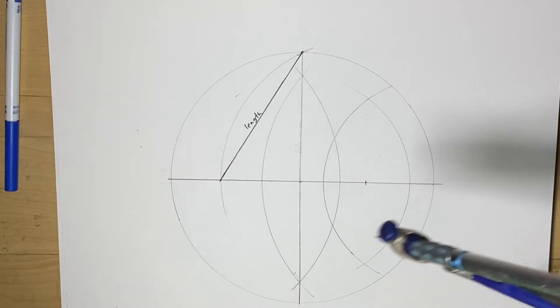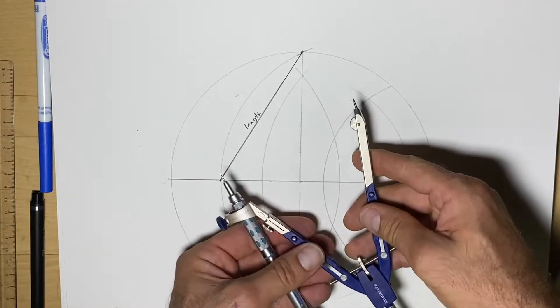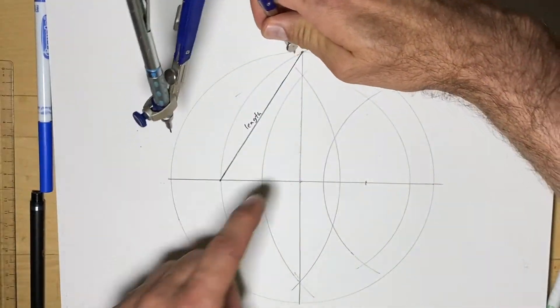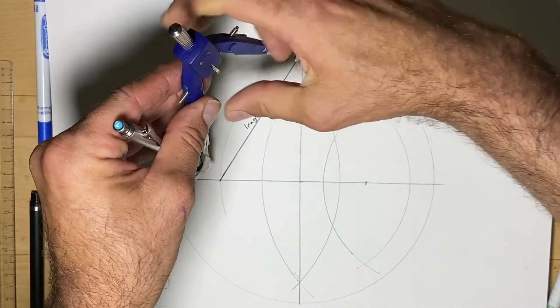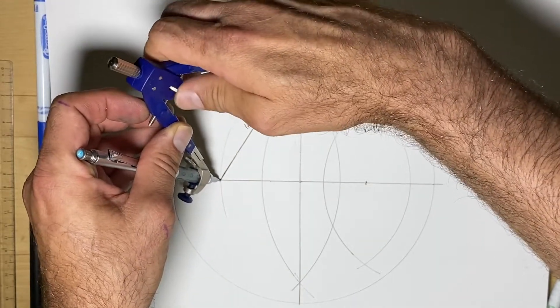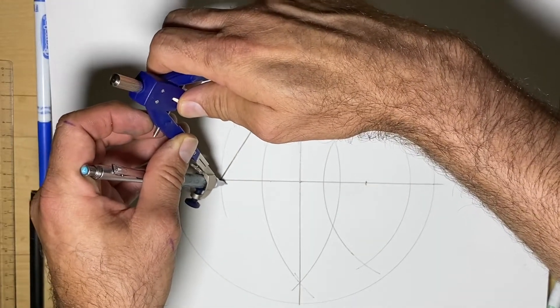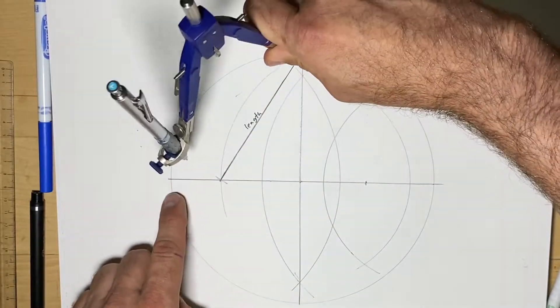Now I'm going to use my compass as a measuring tool. I'm going to put the point here and put the pencil on this spot here, and I'm going to go around five times.